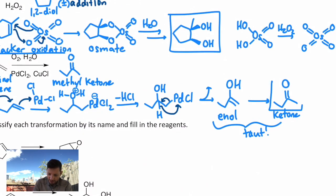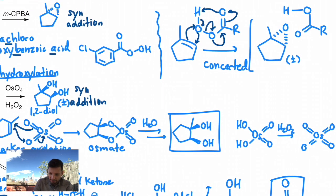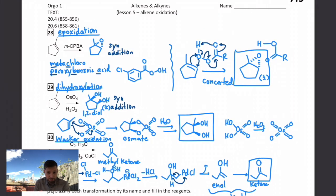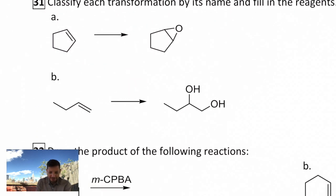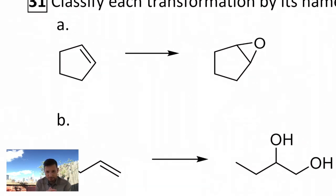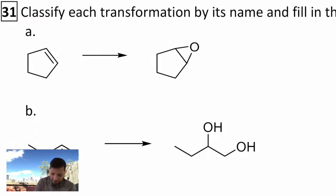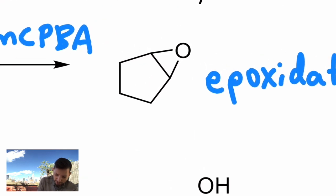So that's how you can take alkenes and make ketones, one, two diols, or epoxides. Three different reactions that incorporate oxygen. So let's just practice this. We've got a little more space here. Let's use this as an opportunity to do some examples. Classify each transformation by the name and fill in the reagents. Well, this is an epoxide. So this is epoxidation. So MCPBA will do that. I'm going to modify the drawing and show that it's syn addition and racemic.